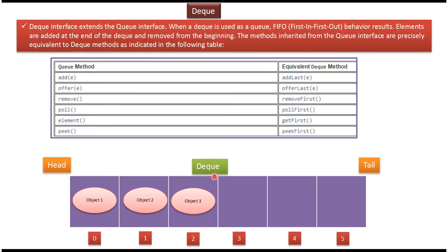Dequeue Interface extends Queue Interface, so we can use Dequeue as a Queue, meaning we can achieve first-in-first-out behavior using Dequeue. We can add elements at the end and remove elements from the beginning. The corresponding Dequeue methods for Queue methods are: add → addLast, offer → offerLast, remove → removeFirst, poll → pollFirst, element → getFirst, peek → peekFirst.